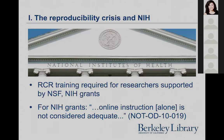The inability to consistently confirm published findings has made research reproducibility a high priority for funders, as we've heard today. Both NSF and NIH have mandated RCR training for researchers. RCR is defined by NIH as intellectual honesty in the formulation, conduct, and reporting of scientific research.